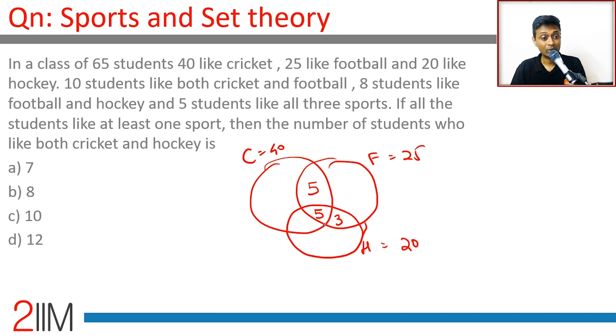The number of students who like both cricket and hockey, we need to find this. Let's call this as x. And so this is 25, 5 plus 5, 10 plus 3, 13. This remaining should be 12. This is 40, so 10 plus x. It should be 30 minus x. This is 28 plus x, 12 minus x.